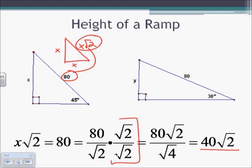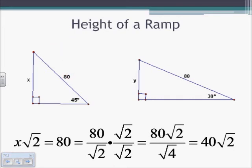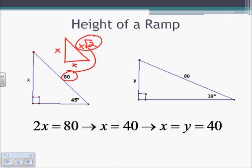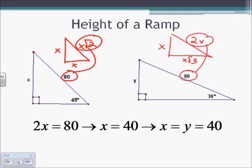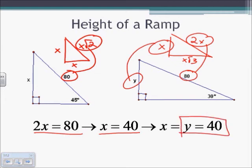Looking at y now and the 30-60-90 triangle, we know that we have the special right triangle as x, 2x, and x square root of 3. The 2x is in the same spot as 80, so therefore 2x is equal to 80. That means that x is equal to 40, and that means that since x and y are in the same spot on the special right triangle and the figure, we're left with our final answer for the height of y is equal to 40.